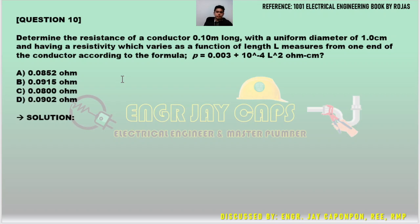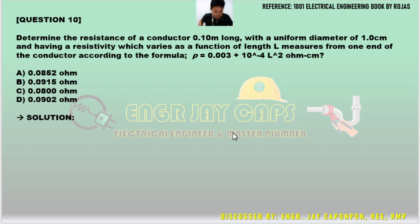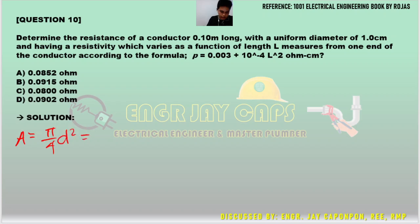Question number ten: Determine the resistance of a conductor 0.1 meter long with a uniform diameter of 1 centimeter, having a resistivity that varies as a function of the length measured from one end according to a given formula. This is another challenging problem involving integration. Let's first solve the area: A = pi/4 times d squared = pi/4 times 1 squared = pi/4 cm squared.